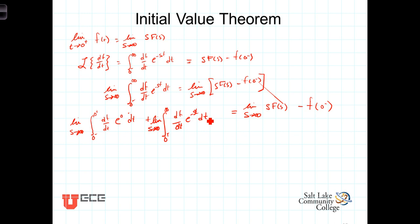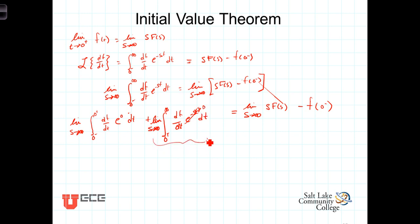Looking first at this second integral: because the variable of integration is t, the limit can be brought inside the integral, and we can let s approach infinity, which makes e^(−st) become e^(−∞), so this term goes to zero and has no contribution to the left-hand side.